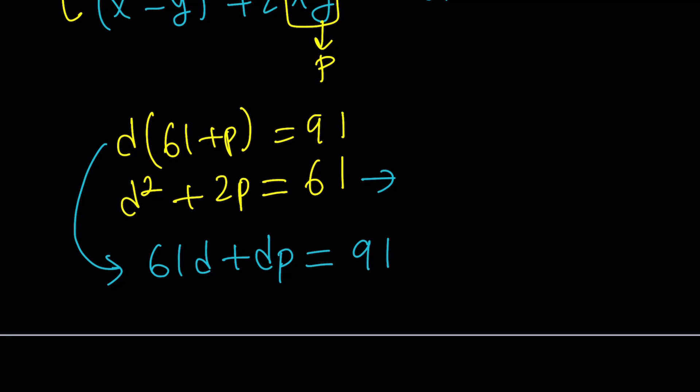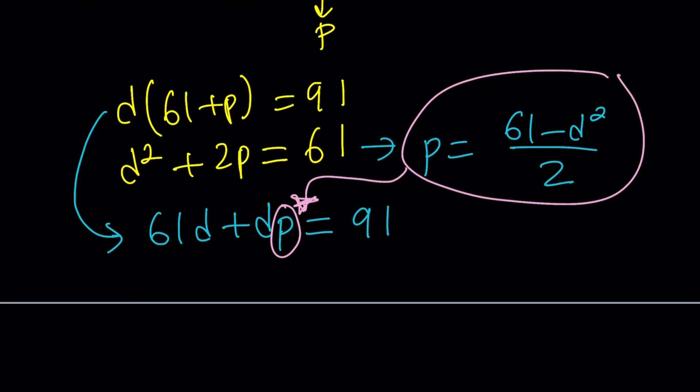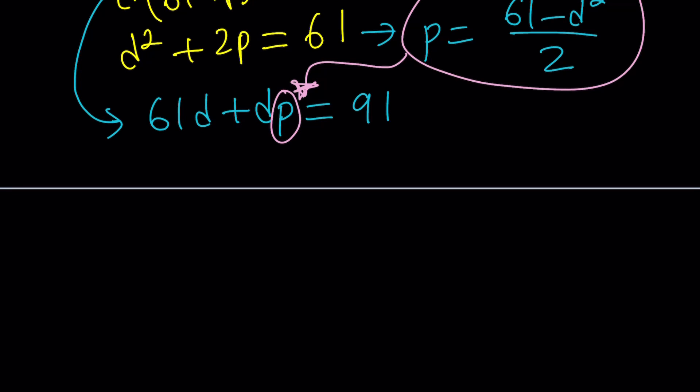So let's go ahead and isolate p here. That's going to be 61 minus d squared divided by 2. And this is awesome because I can plug it in here. I only have one occurrence of p and that will be easy. Now let's go ahead and replace p with 61 minus d squared all over 2. So let's go ahead and substitute 61d plus d times 61 minus d squared over 2 equals 91. So this is the equation we need to solve.